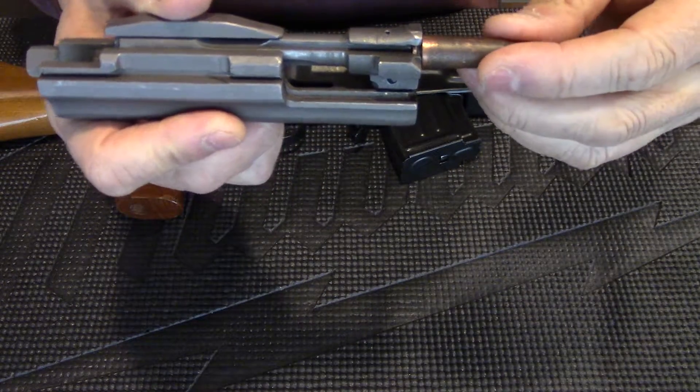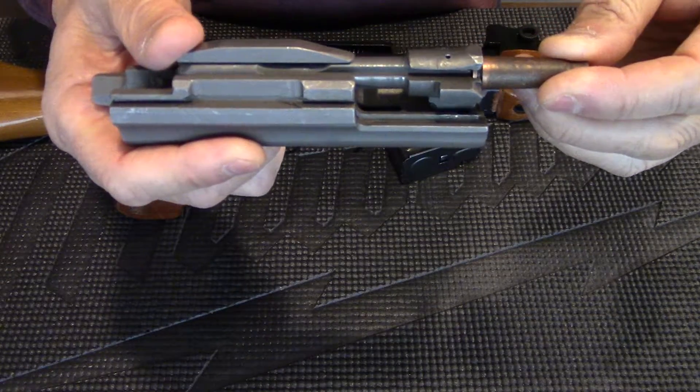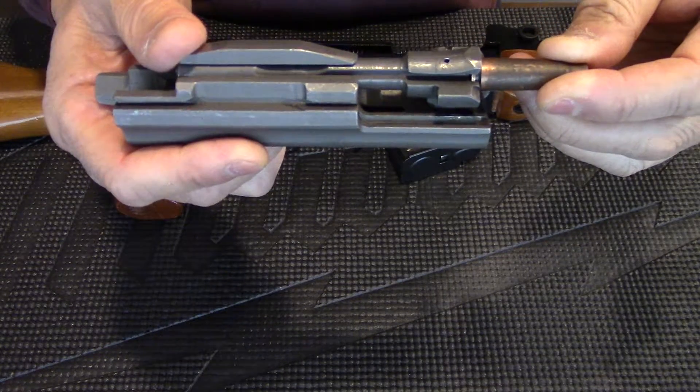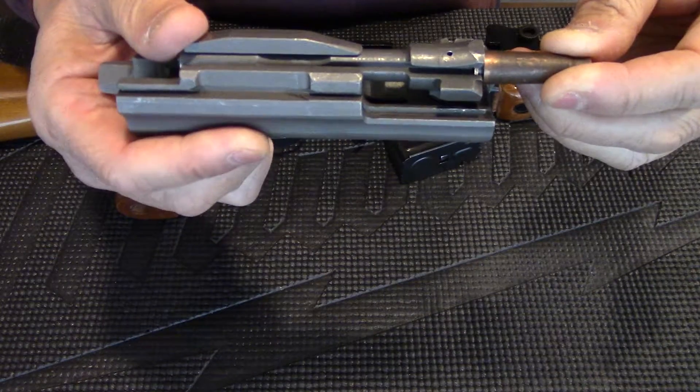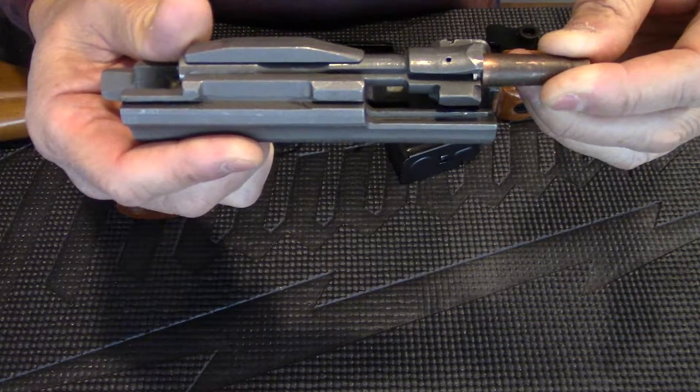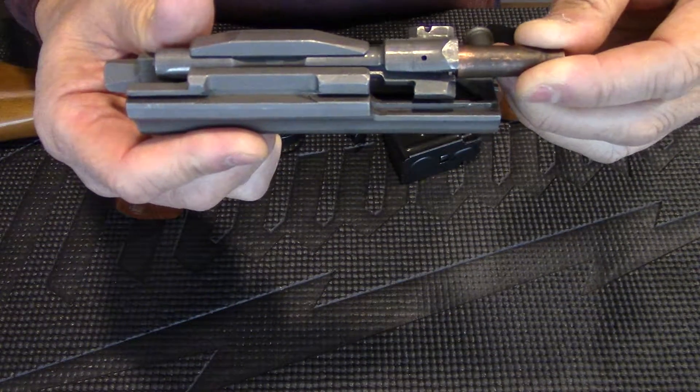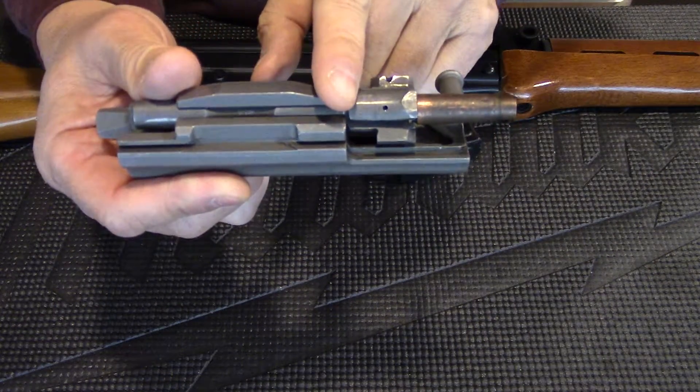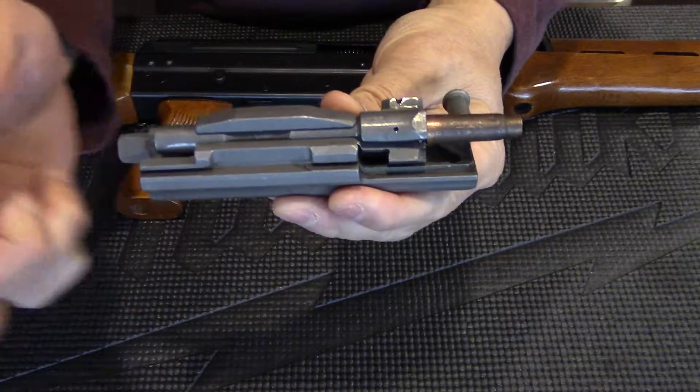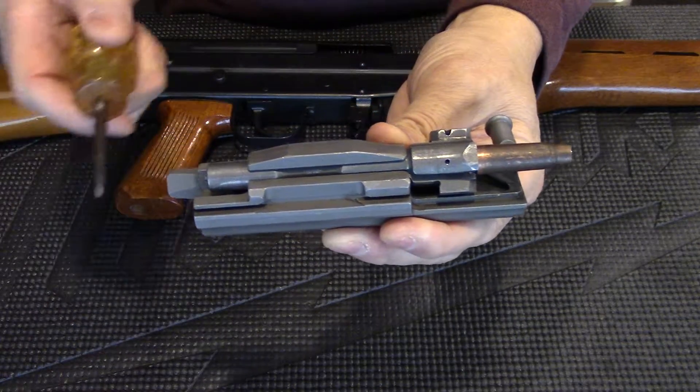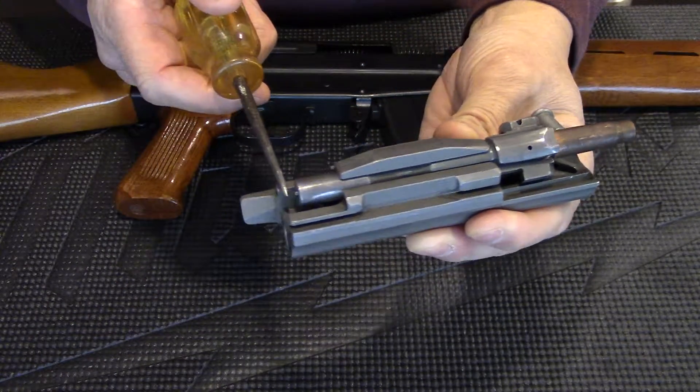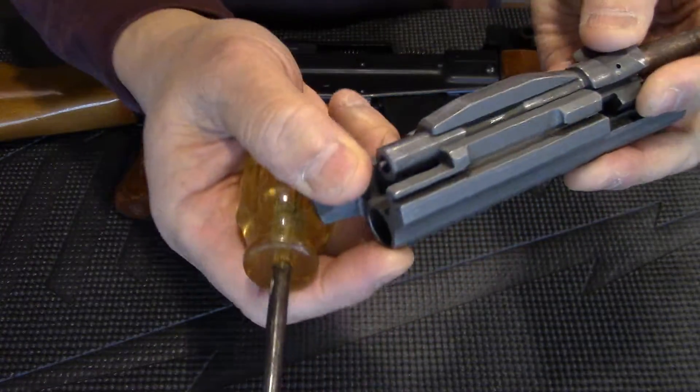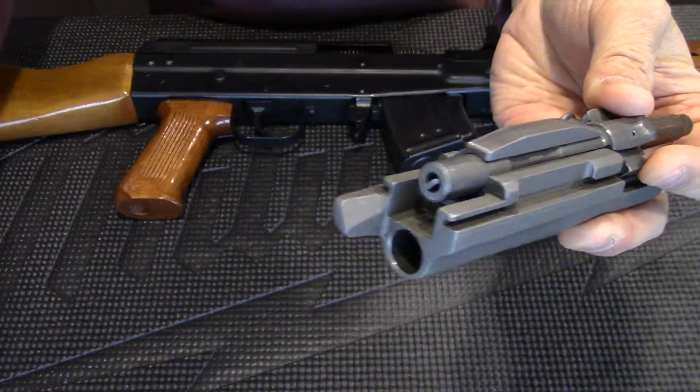When the bolt face touches the face of the chamber, it stopped moving, but the carrier still moves another three-quarter of an inch. As it moves forward, it starts to rotate the bolt head in a clockwise position about 45 degrees. In this position, it's in the lock position. Once you pull the trigger, the hammer hits the firing pin.